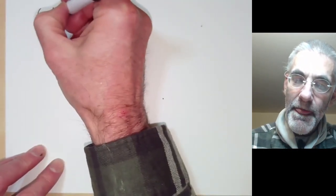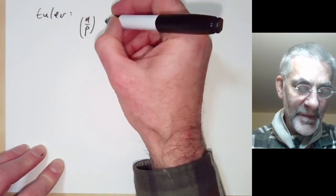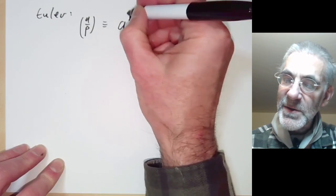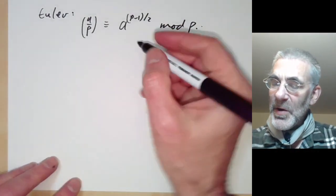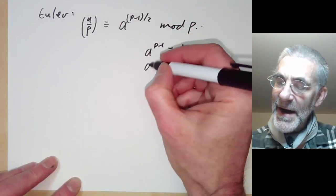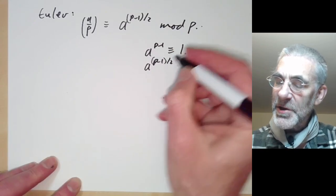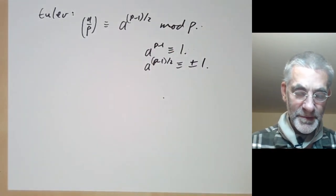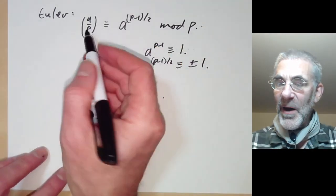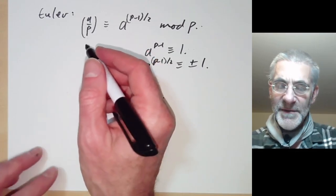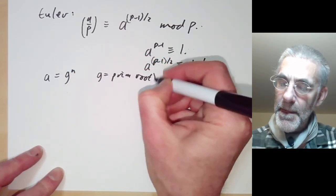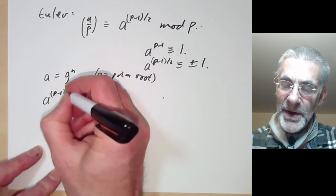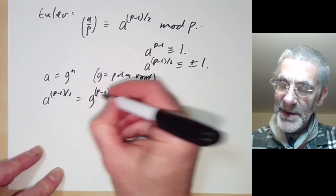Euler found a very neat solution. The Legendre symbol (a/p) is just equal to a to the (p minus 1) over 2, modulo p. By Fermat's theorem, a to the p minus 1 is congruent to 1, so a to the (p-1)/2 has square 1 and must always be congruent to plus or minus 1. A quick way to prove this is to use primitive roots: if we write a equal to g to the n, where g is a primitive root, then a to the (p-1)/2 equals g to the (p-1)n/2, which equals g to the (p-1)/2 all to the n.